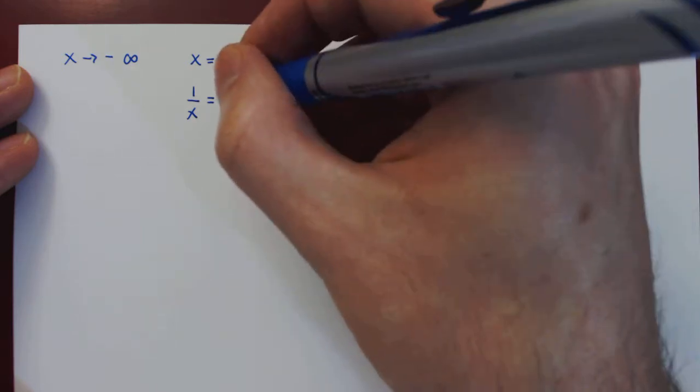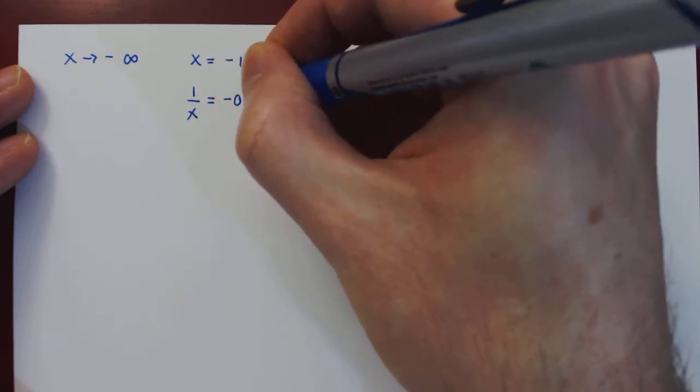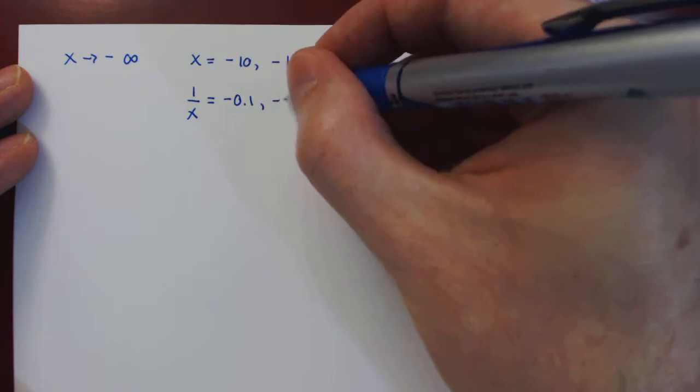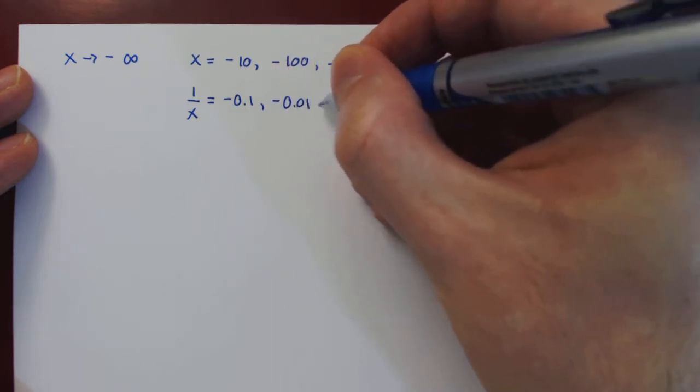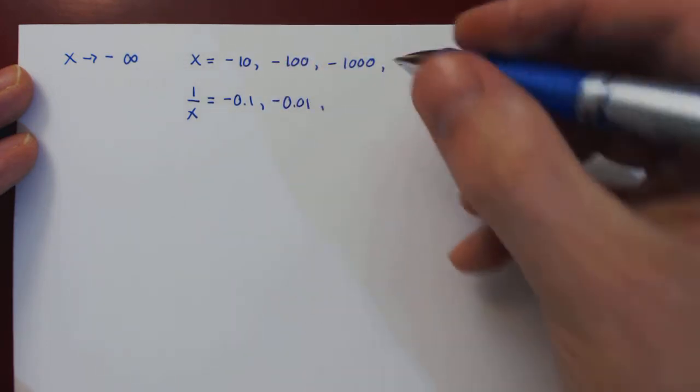1 over negative 10, negative 0.1. 1 over negative 100, negative 0.01.